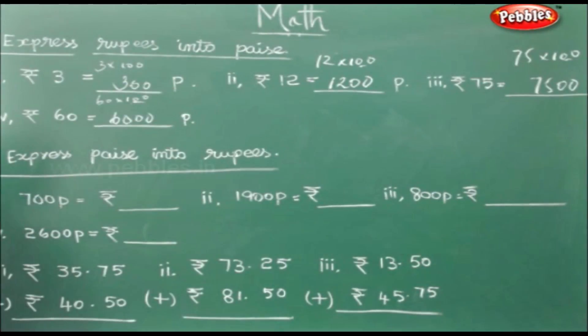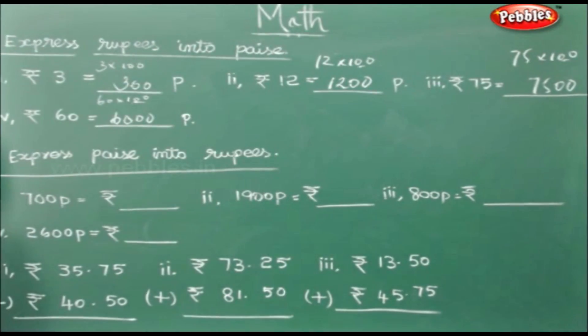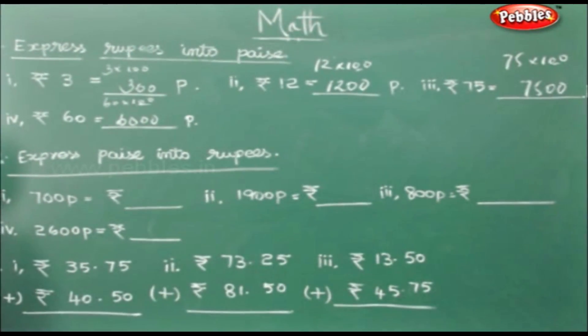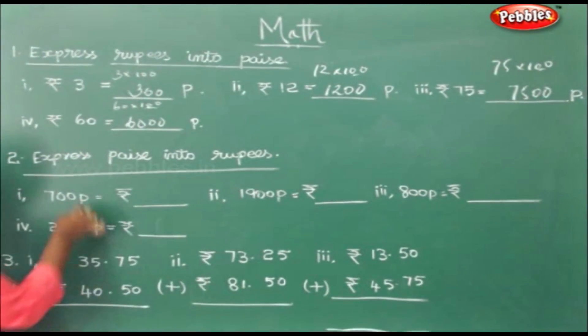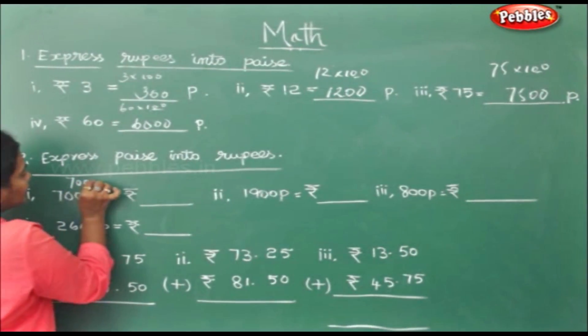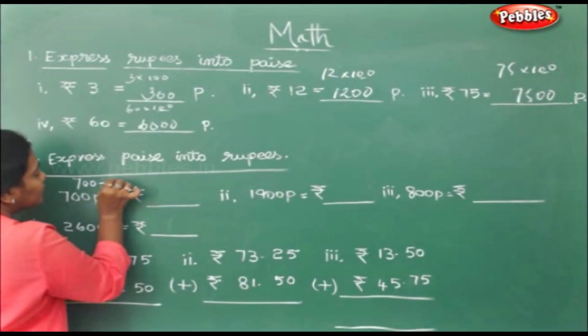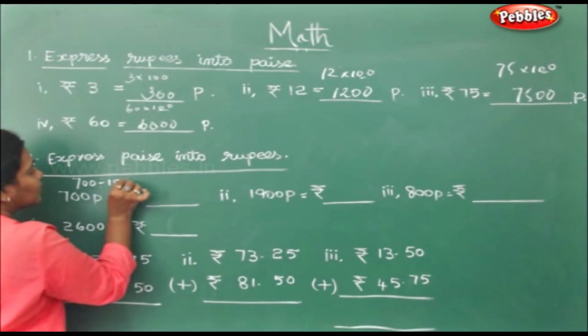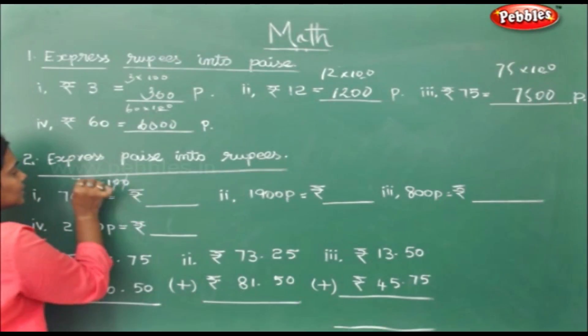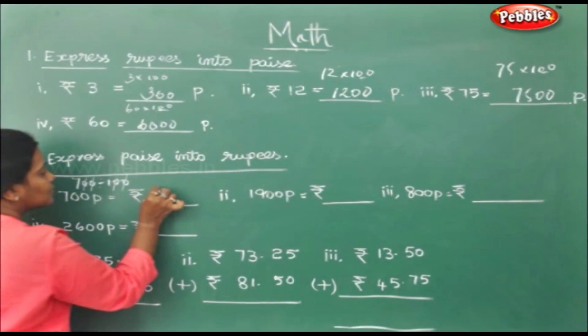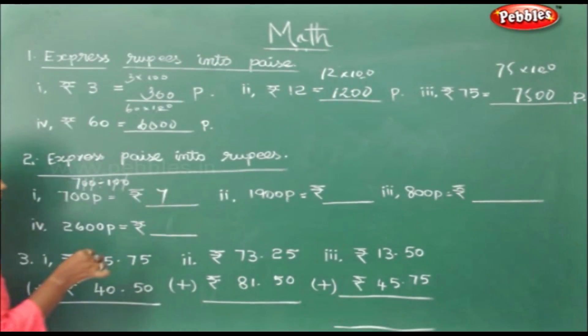Now express paise into rupees. How will you do it? You will divide by 100. So 700 divided by 100 — cut the two zeros — gives rupees 7.